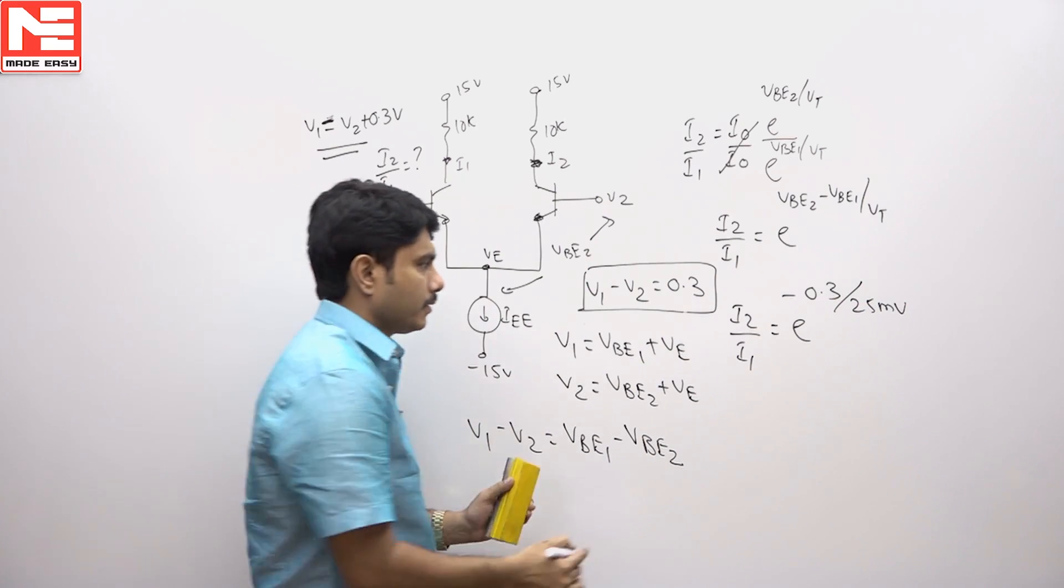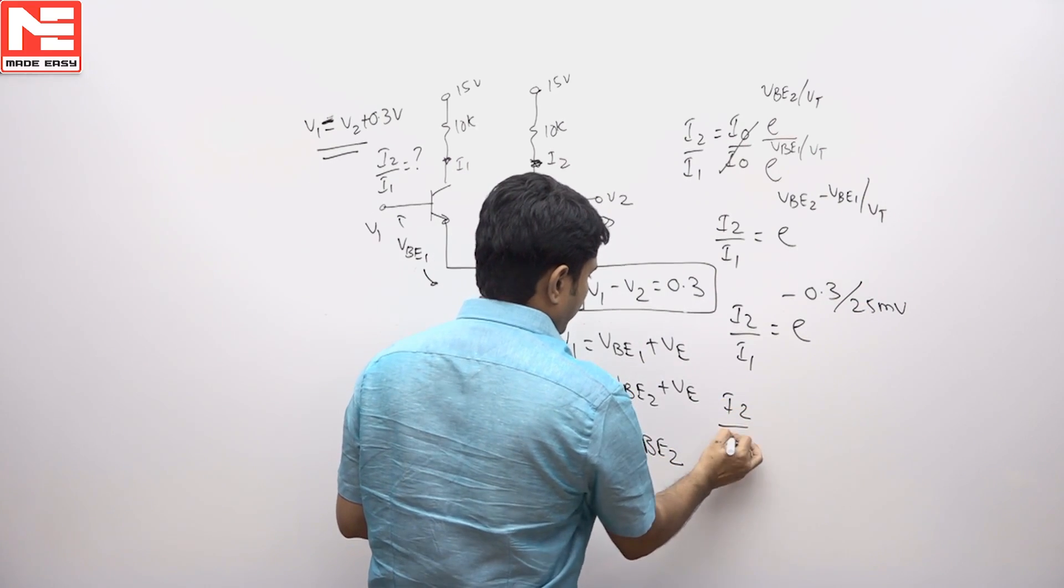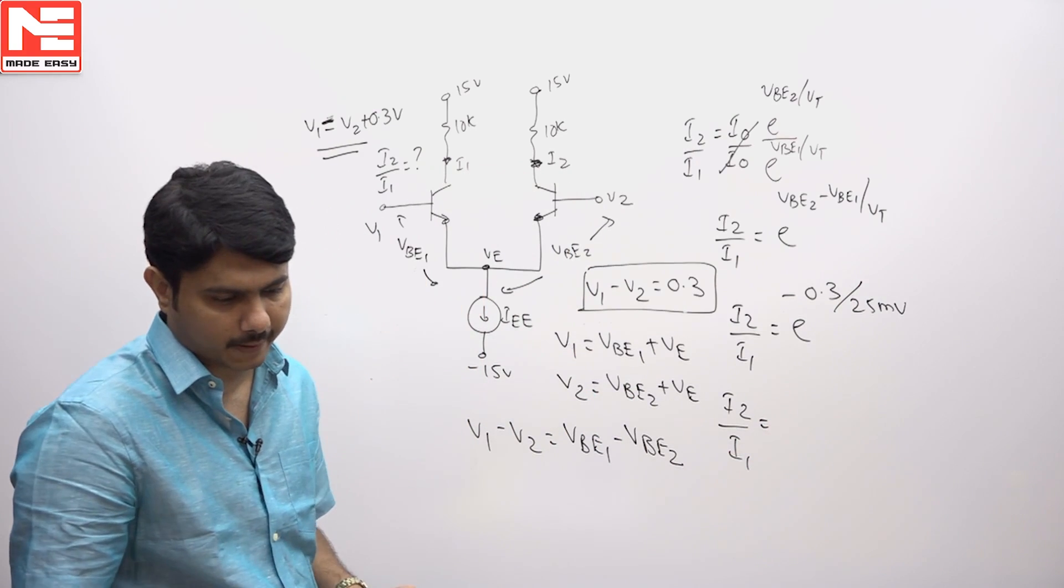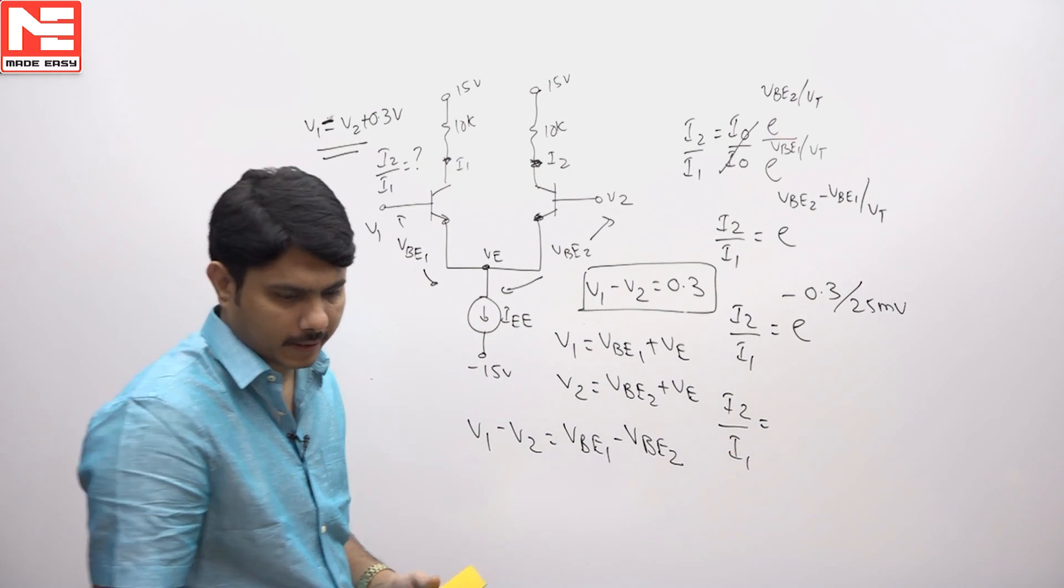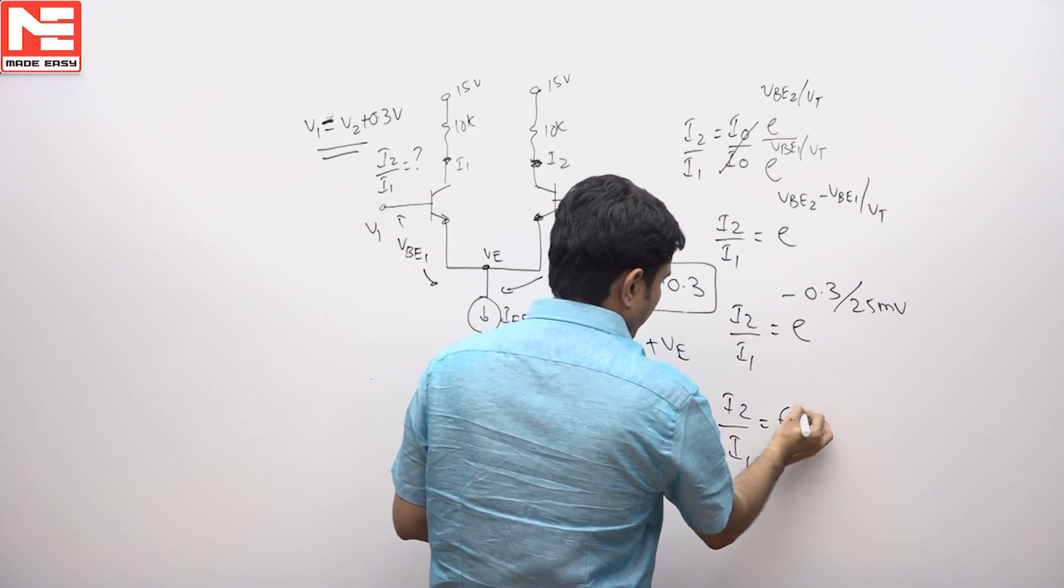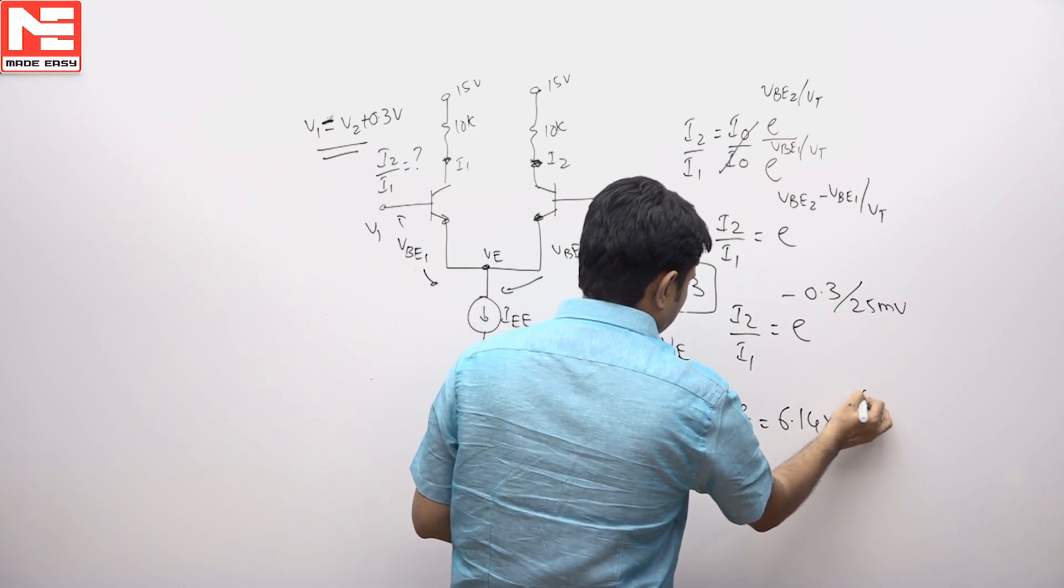exponential value, I2 by I1, answer is coming nearly around the decimal value, it comes around 6.14 into 10 power minus 6.